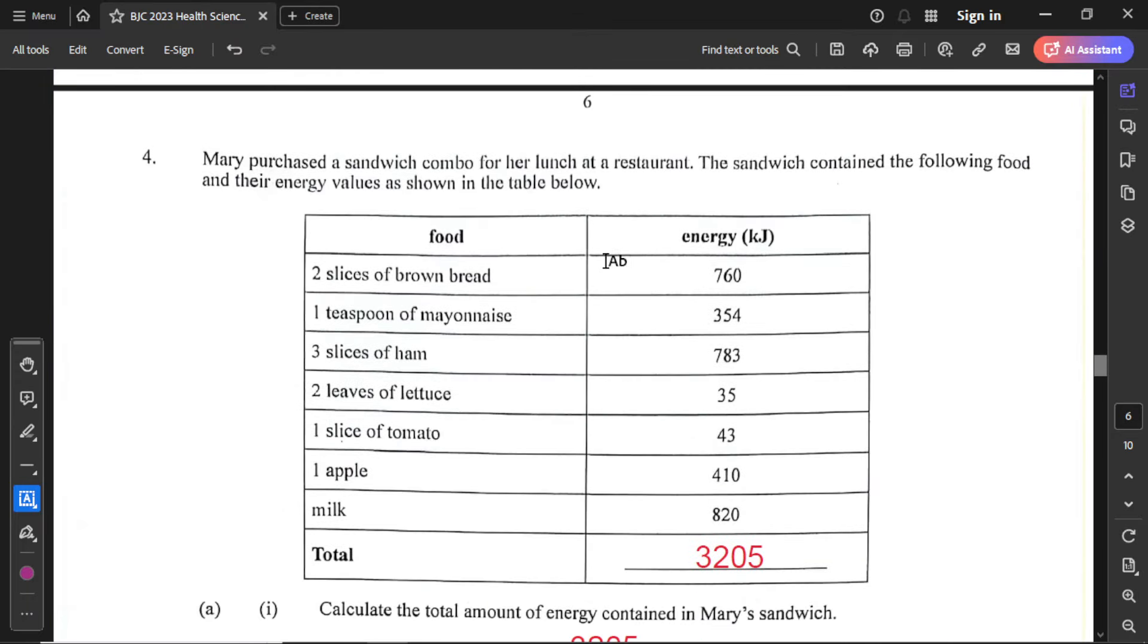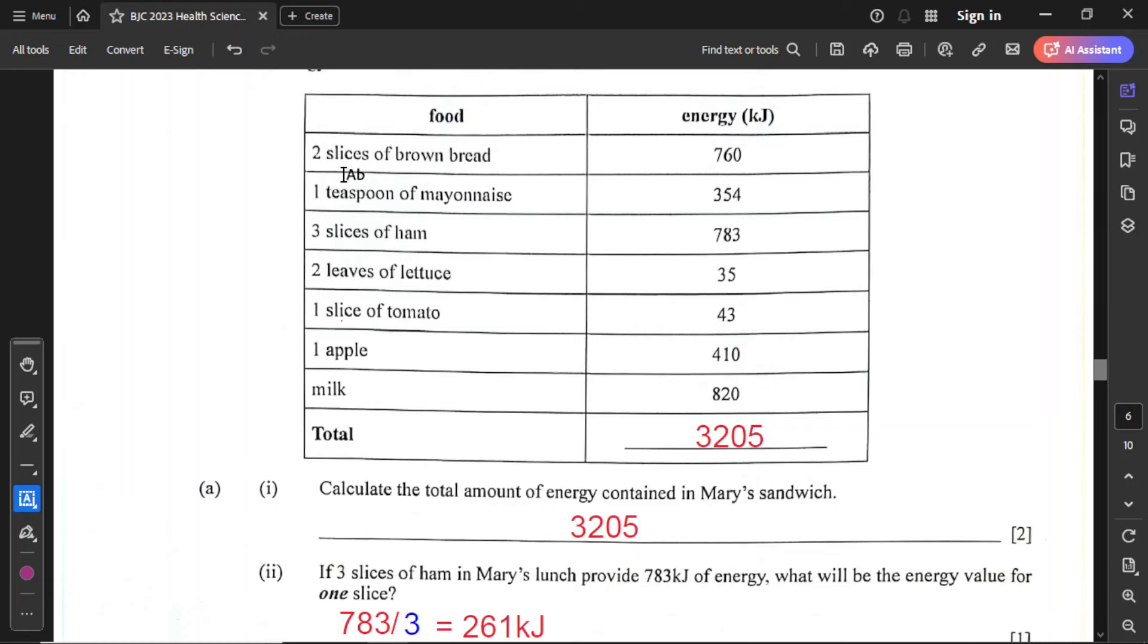Question number 4. Mary purchased a sandwich combo for her lunch at a restaurant. The sandwich contained the following foods and their energy values as shown in the table. Two slices of brown bread: 760 kilojoules. One teaspoon of mayonnaise: 354 kilojoules. Three slices of ham: 783 kilojoules. Two leaves of lettuce: 35 kilojoules. One slice of tomato: 43 kilojoules. One apple: 410 kilojoules. Milk: 820 kilojoules.